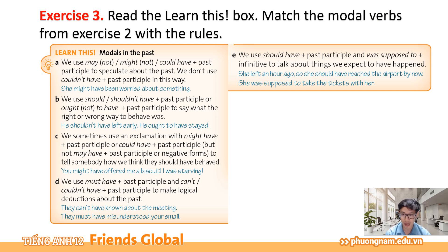Rule D: We use must have plus past participle and can't / couldn't have plus past participle to make logical deductions about the past. Đối với must have và quá khứ phân từ và can't hoặc couldn't have và quá khứ phân từ, chúng ta sẽ dùng những cụm từ này để đưa ra những suy diễn mang tính logic trong quá khứ. Ví dụ: They can't have known about the meeting. They must have misunderstood your email — Họ chắc không thể biết về buổi họp. Họ chắc hẳn đã hiểu lầm email của bạn. Dấu hiệu nhận biết là chúng ta có một cái ngữ cảnh để suy ra thông tin — must have cho độ chắc chắn cao, can't have / couldn't have cho dạng phủ định.